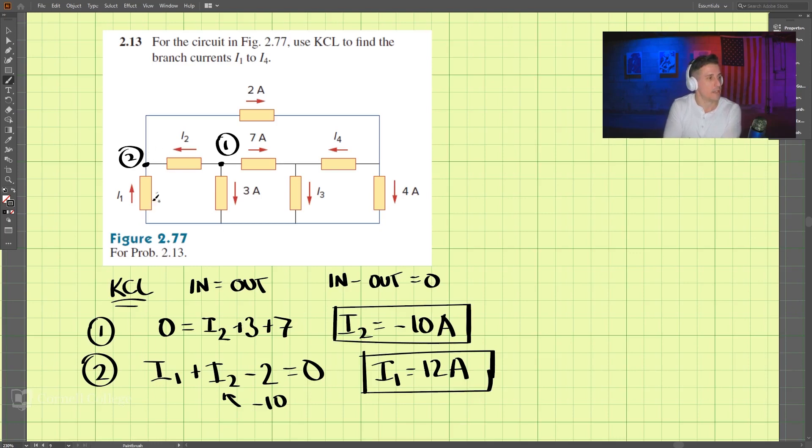Okay? So we have I1, I2, and now we need I3 and I4. So, let's go to this point now, 3.